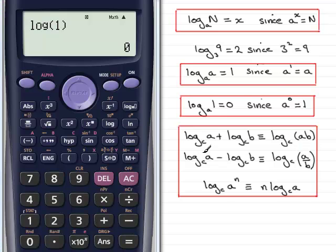The second rule is that the log of any number a minus the log of any other number b in the same base c is identical to the log of a divided by b in base c. And the final rule here is the log of a to any power n in a particular base c is identical to n times the log of a in base c.